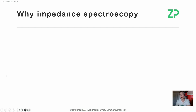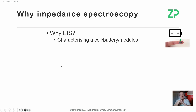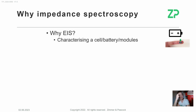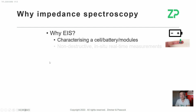The answer for us at ZP is that EIS is a very good way of characterizing an electrochemical cell — the simplest element of a battery: an anode, a cathode, and an electrolyte in between. EIS is a good way of understanding or characterizing that electrochemical cell at the beginning of its lifetime, halfway through its lifetime, and at the end of its lifetime.